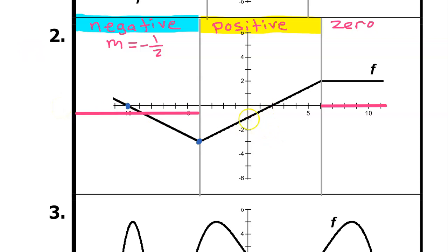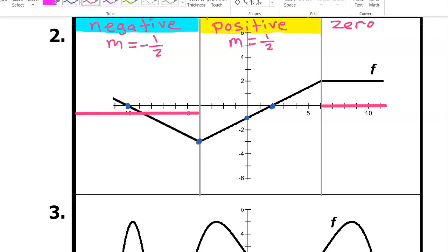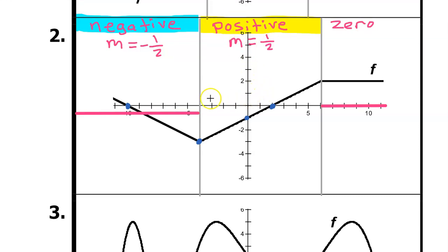Similarly in the next interval, we can use two points to see that the slope of this straight line is a positive one half — up 1 over 2. So the slope in this interval is constantly one half, meaning we draw f prime as a horizontal line at one half. Notice that because we have sharp turns in function f, we have jump discontinuities in the graph of f prime. So you should expect that to happen.